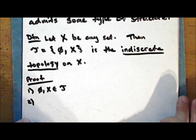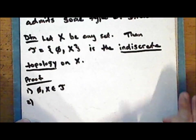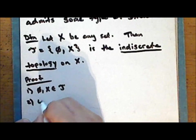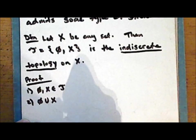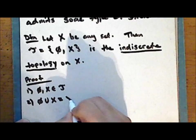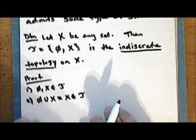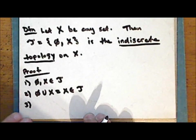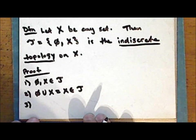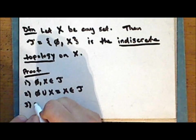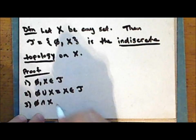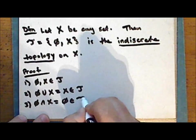The second condition is that any arbitrary union of subsets in the collection tau must once again be in the collection tau. Looking at the union of the two distinct elements: the union of the empty set and the entire set is the entire set, which is in tau. Third, any finite intersection of the subsets in the collection tau must once again be in the collection tau. The intersection of the empty set and the entire set is the empty set, which is in tau.